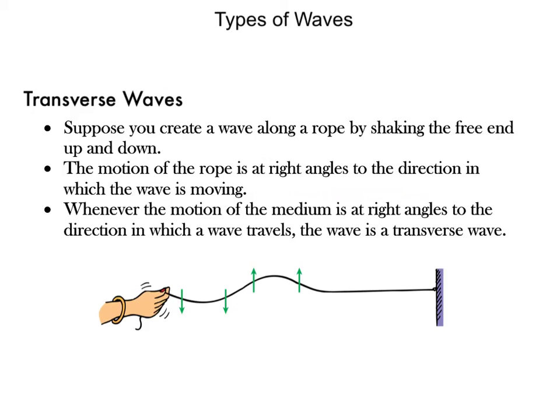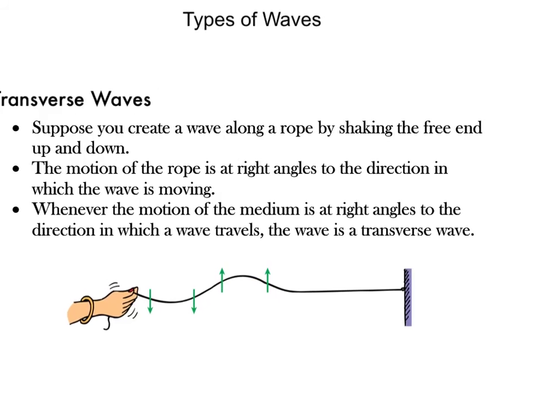Whenever the motion of the medium — in this case the rope — is at right angles to the direction the wave travels, the wave is a transverse wave. Waves in the stretched strings of musical instruments, like a guitar or violin, and on the surfaces of liquids like water, are all transverse waves.